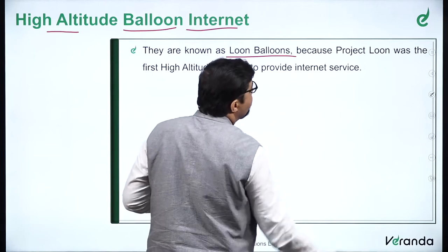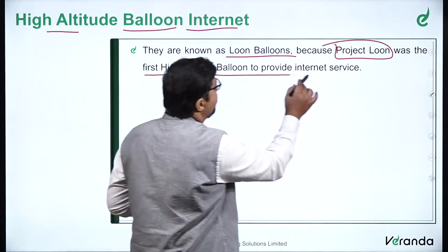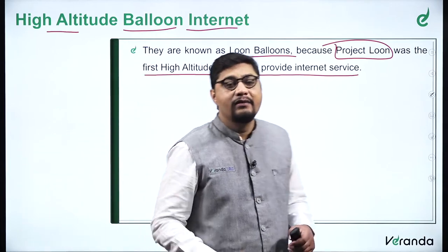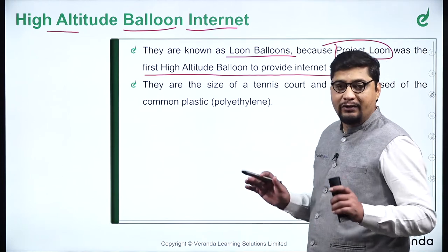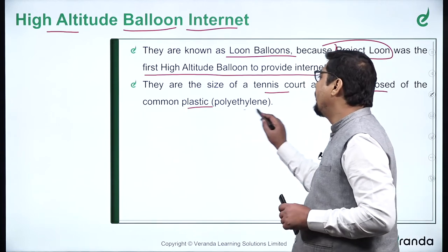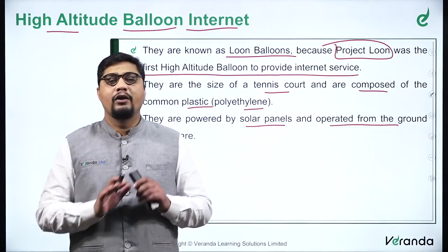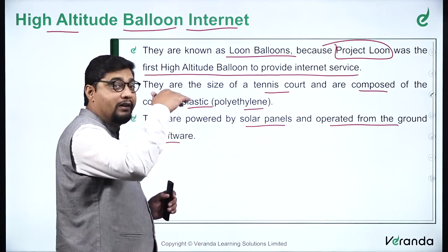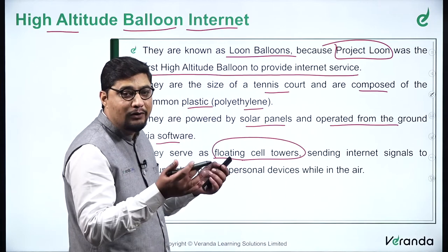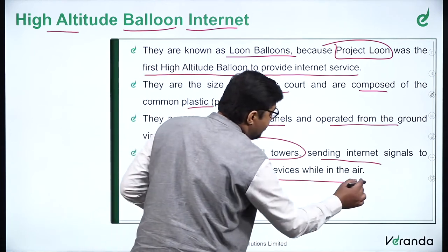They are known as Loon Balloons because Project Loon — which was asked by UPSC — was the first high altitude balloon to provide internet service. The balloon carries devices capable of providing internet, so they are like towers in the sky. They are the size of a tennis court, composed of common plastic that is polyethylene, powered by solar panels, and operated from the ground via software. They serve as floating cell towers, sending internet signals to ground stations and personal devices while in the air.